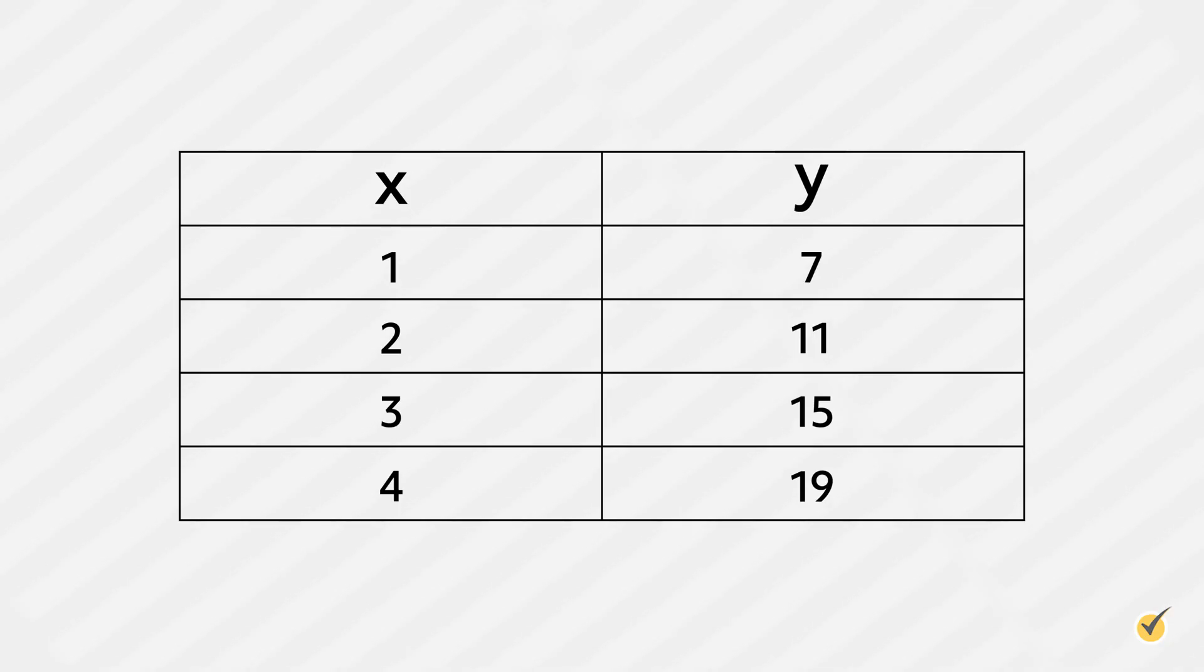Now, let's look at a table of values for the first four terms of this function. In this case, we are only looking at a portion of the function, so our domain of values would be 1, 2, 3, and 4. And our range of values would be 7, 11, 15, and 19.